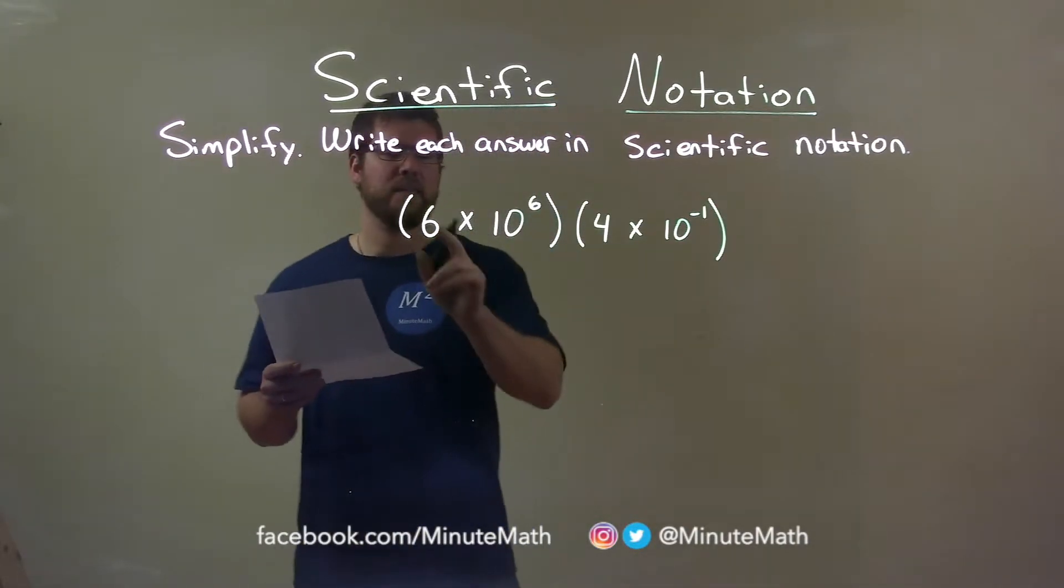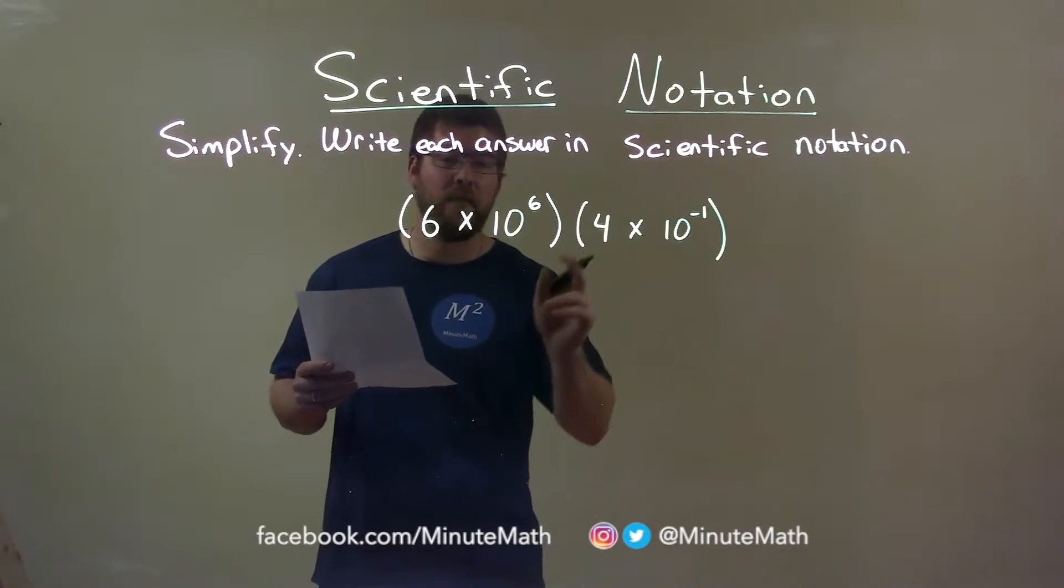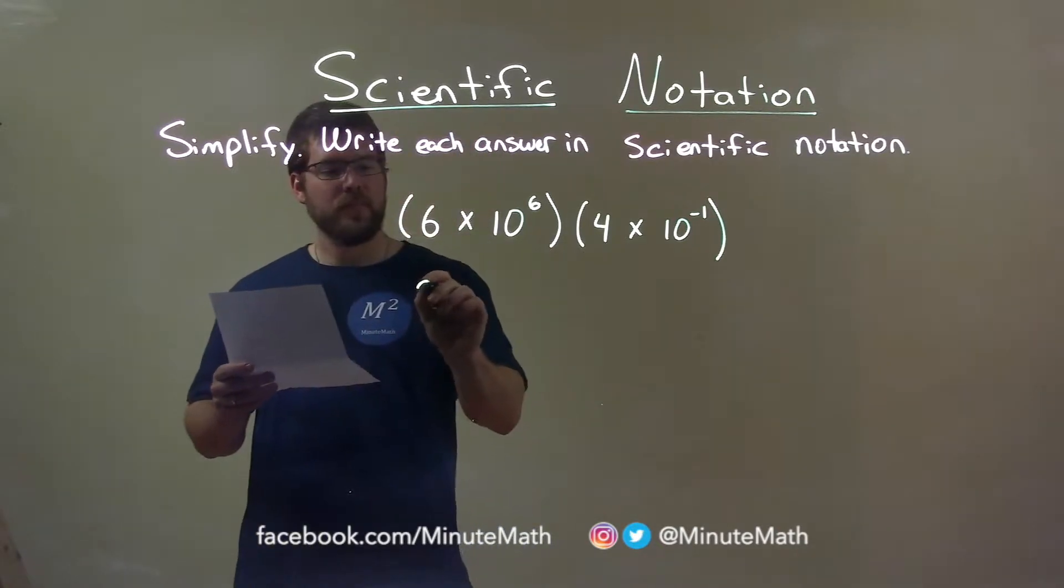First thing I want to do is take the 6 and multiply it by that 4. 6 times 4, 24.